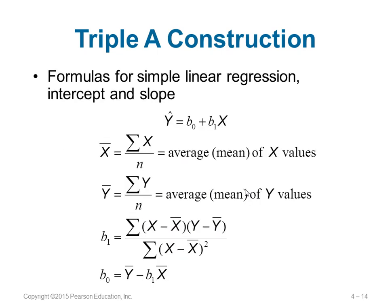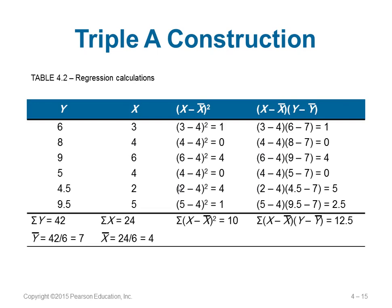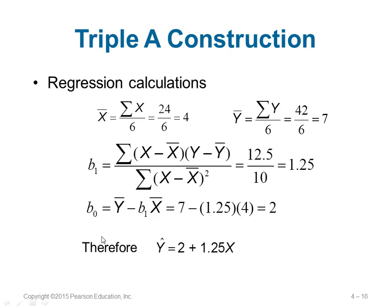We want to reduce the error whether it is positive or negative. There are formulas for simple linear regression: ŷ = b0 + b1x. The mean of x is x̄ = Σx/n, and similarly ȳ = Σy/n. b1 = Σ(x − x̄)(y − ȳ) / Σ(x − x̄)², and b0 = ȳ − b1x̄. If you calculate x − x̄ squared and x − x̄ times y − ȳ, sum them for all values, you get the result. For our example, ŷ = 2 + 1.25x.